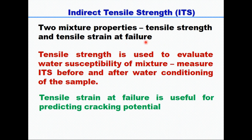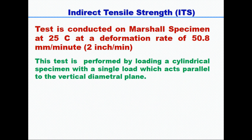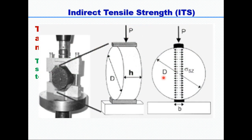Tensile strain at failure is useful for predicting the cracking potential of the mix. This test is conducted on Marshall specimens at 25 degrees centigrade at a deformation rate of 50.8 mm per minute or 2 inches per minute. The test is performed by loading a cylindrical specimen with a single load which acts parallel to the vertical diameter plane.